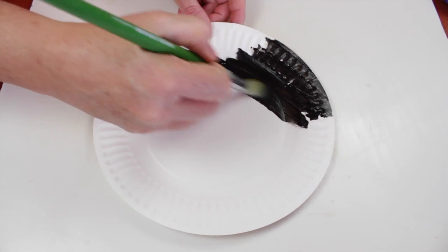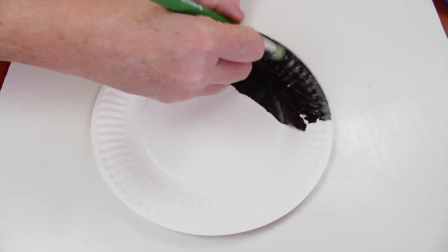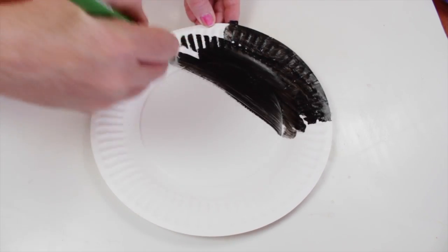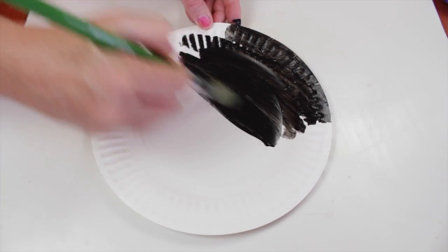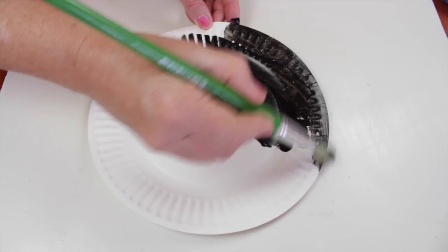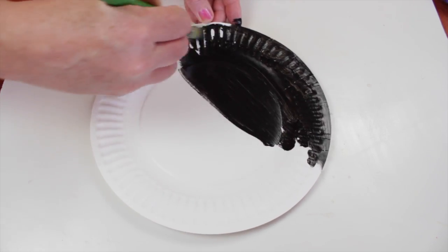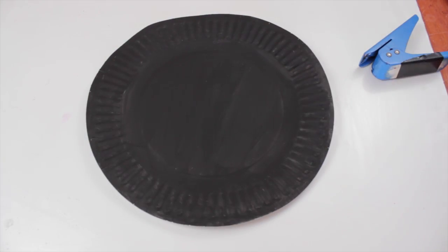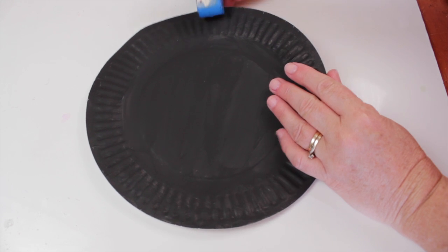Paint the paper plate with black paint and leave to dry. Punch holes evenly around the edge of the paper plate.